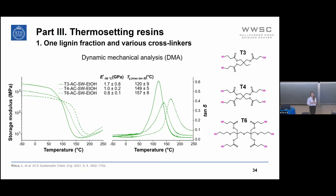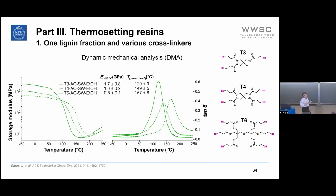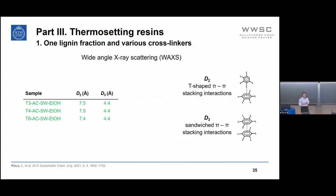We investigated the mechanical properties by dynamic mechanical analysis (DMA). Storage modulus showed a decreasing trend going from the trifunctional to the hexafunctional crosslinker, while crosslink density increased from tri- to hexafunctional. Most interestingly, we obtained thiol-ene thermosetting materials with relatively high Tg values, around 120–160°C, and by choosing different crosslinkers we can tune the Tg — very good results.